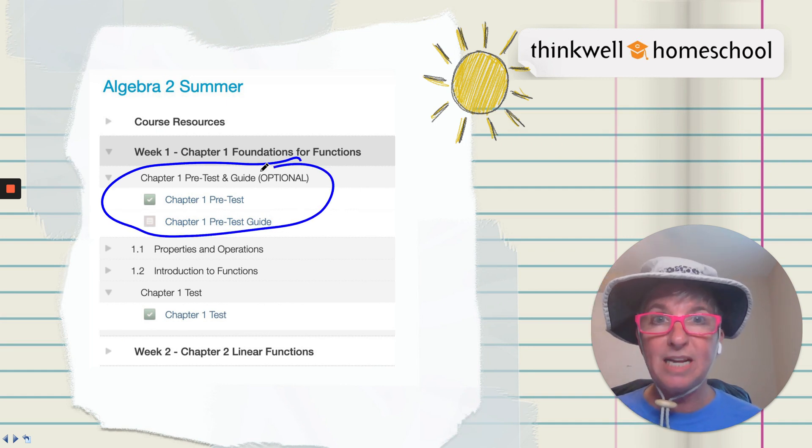Okay, so you take the pre-test before you've covered any of the topics. You answer all the questions, and then you look at the guide to see what topics that you mastered in the pre-test, and you can skip those topics. That's amazing.